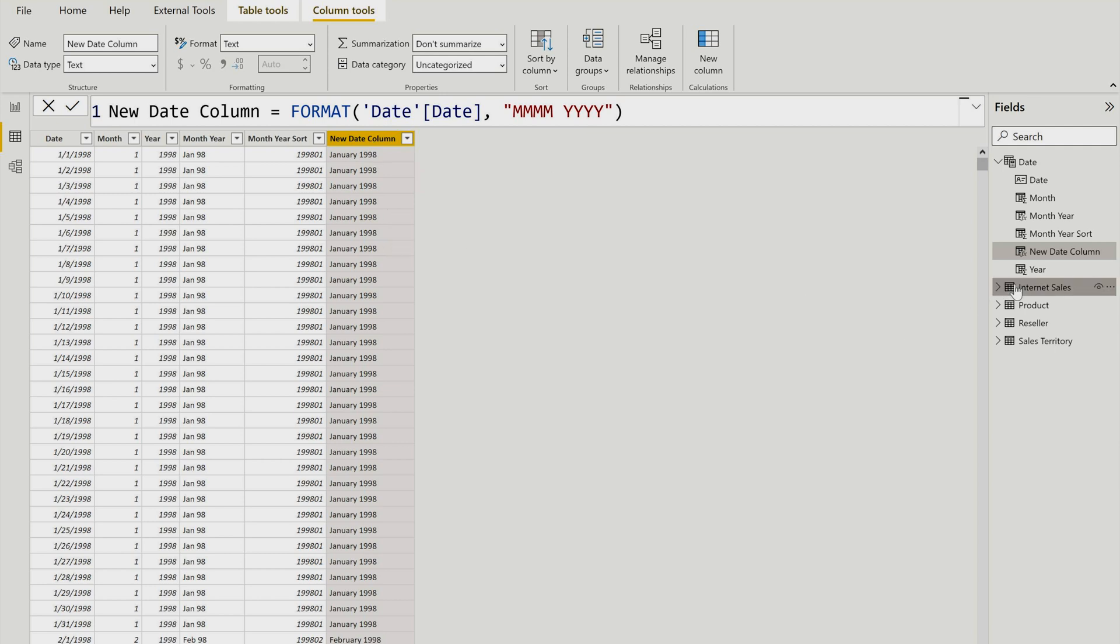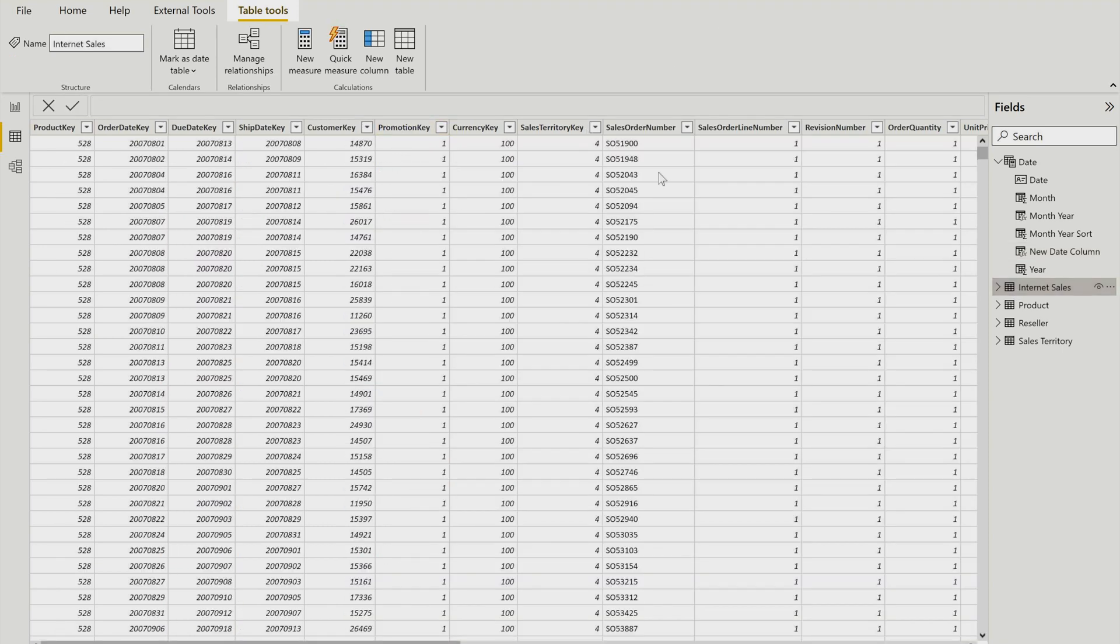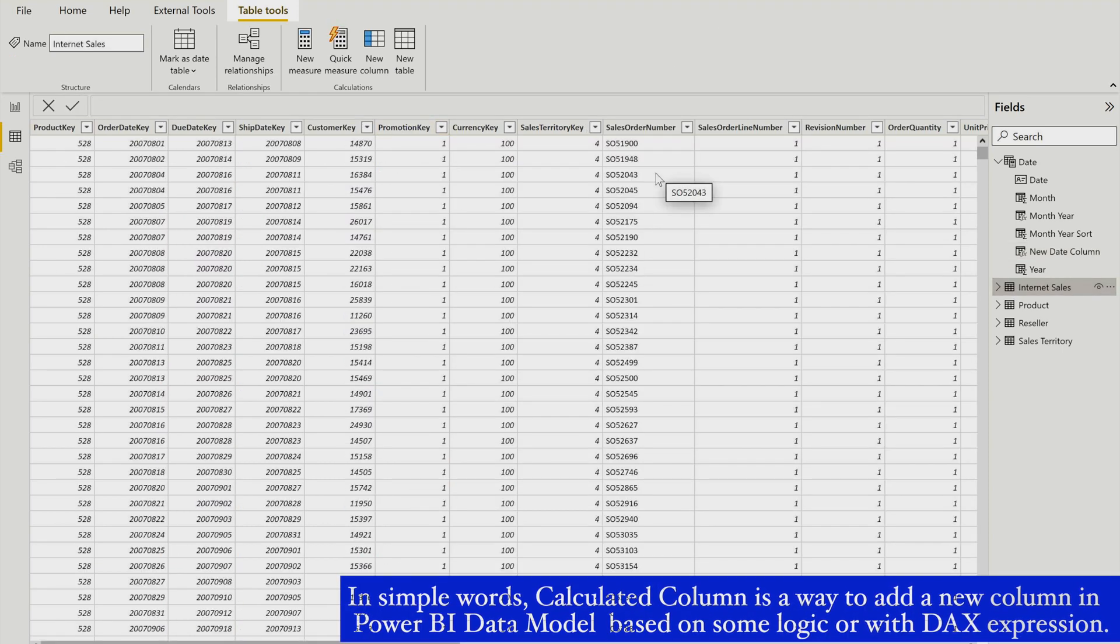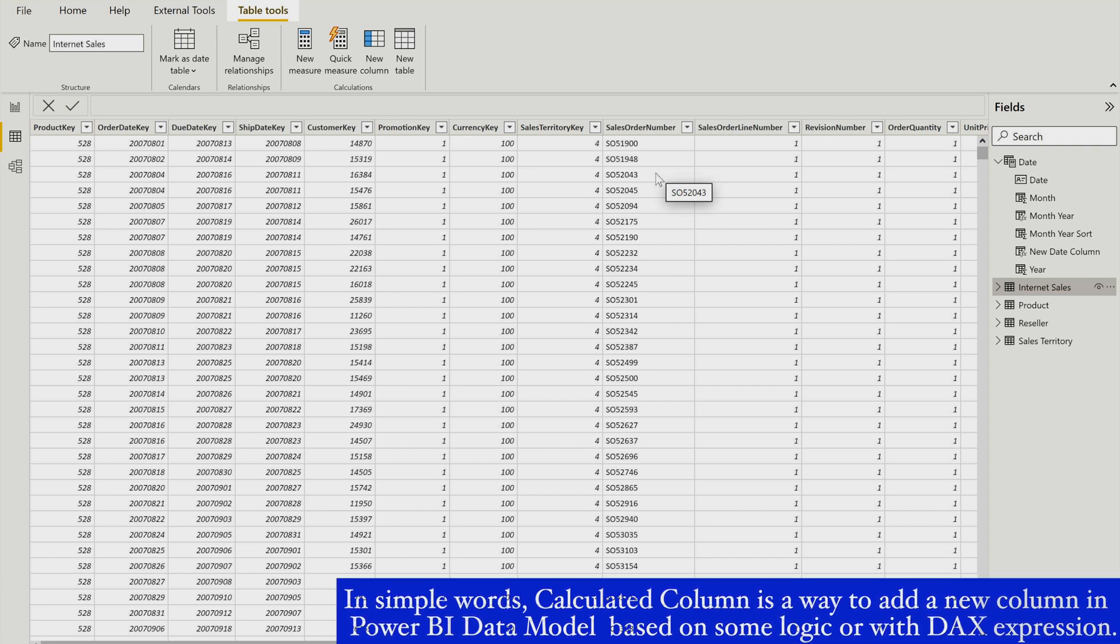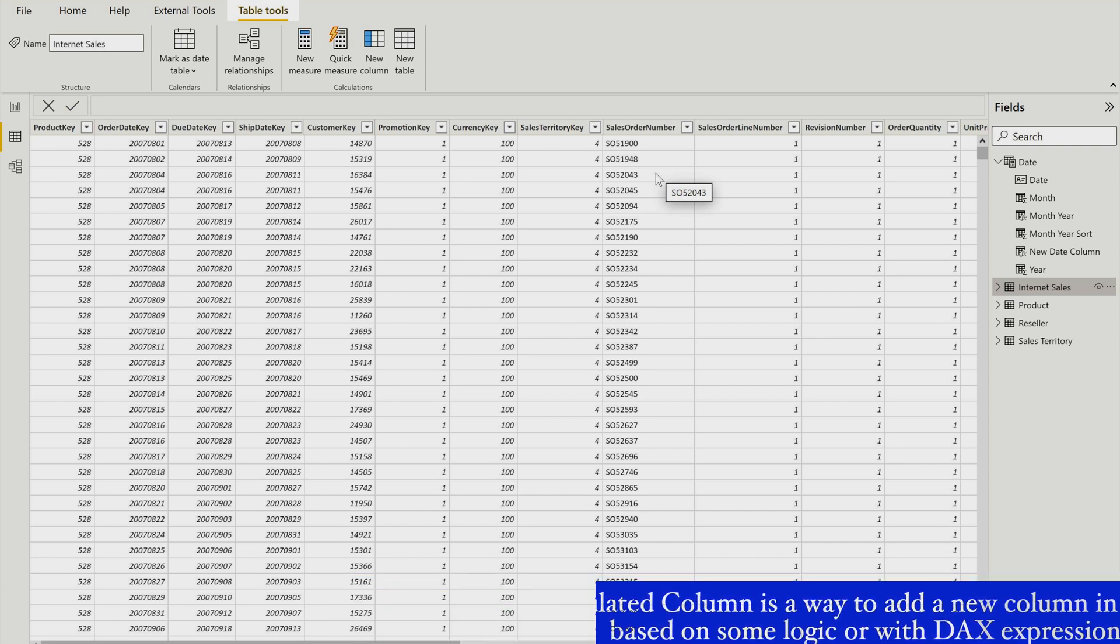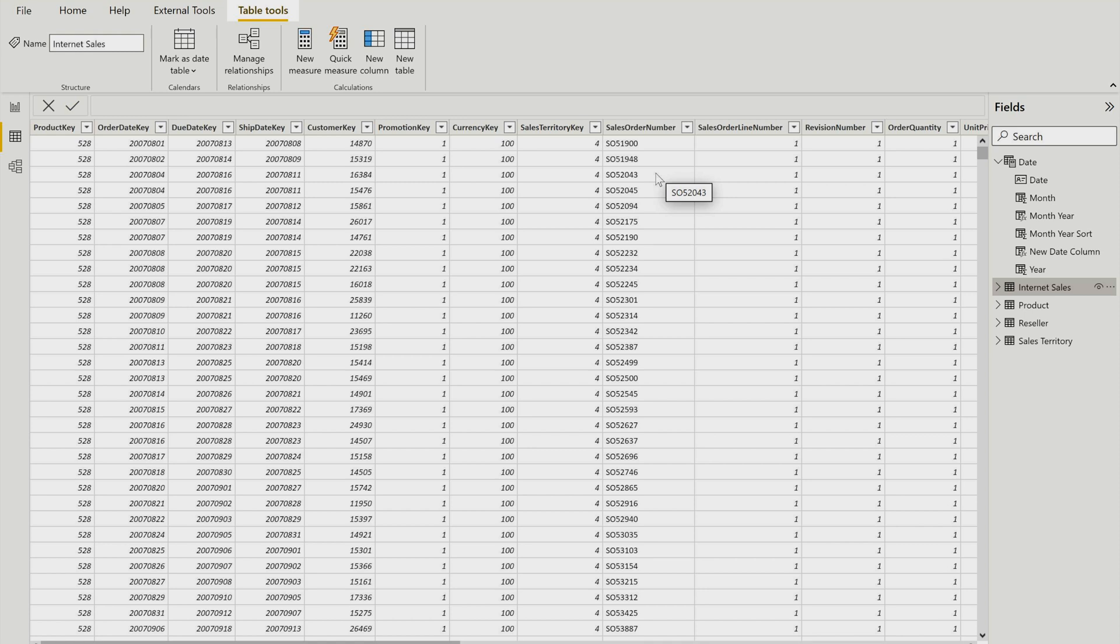If you go into any other table and suppose you want to multiply two columns or extract some value from another column using any other DAX function, you can do that. All these are going to be your calculated columns. However, you should remember that whenever you are creating any calculated column, they reside into your data model itself. That means whenever you refresh your data, only then their value would change. Otherwise their value won't change.